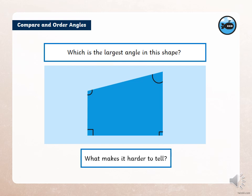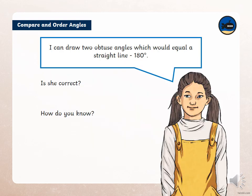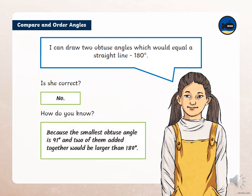What makes it harder to tell? I can draw two obtuse angles which would equal a straight line 180 degrees. Is she correct and how do you know? So pause the video for a few minutes and work out whether she's correct or incorrect. Because the smallest obtuse angle is 91 and two of them added together would be larger than 180 degrees.